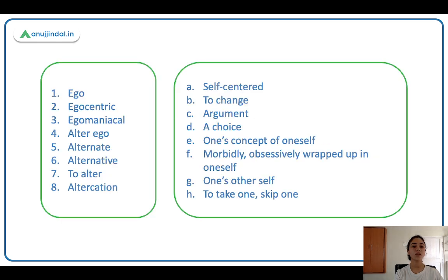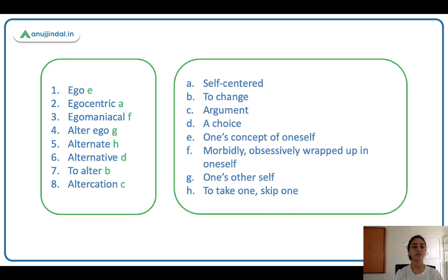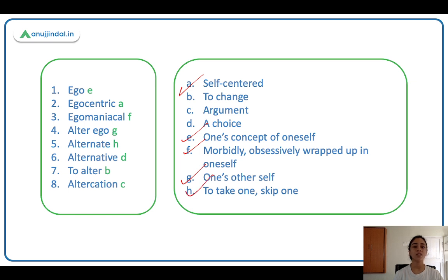Now we have another match-the-following exercise. Pause the video, mark your answers, then check. Ego — one's concept of oneself, I, me. Egocentric — self-centred, self-involved. Egomaniacal — morbidly obsessively wrapped up in oneself. Alter ego — one's other self. Alternate — to take one, skip one. Alternative — a choice. To alter — to change. Altercation — a verbal dispute, an argument.